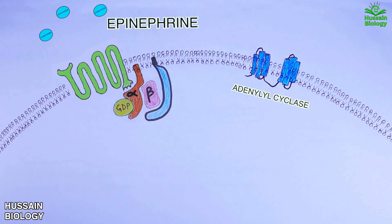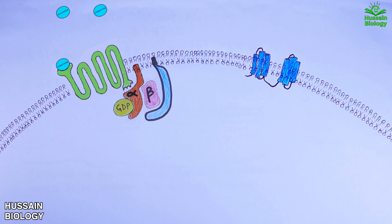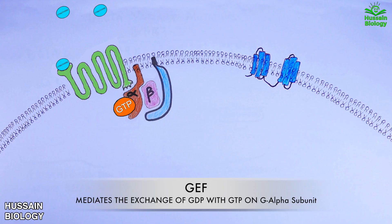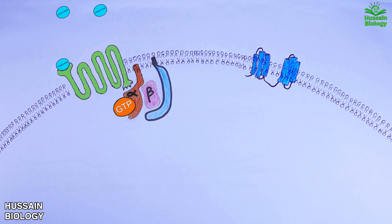Now let's initiate the signaling pathway. The signaling molecule for this pathway is epinephrine — it comes in and binds with the beta adrenergic receptor as shown in the diagram. Upon binding, we have a conformational change in the GPCR, upon which the GDP bound with the G alpha protein is replaced by GTP as shown in the animation. This process is mediated by GEF, that's guanosine nucleotide exchange factor.